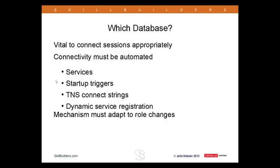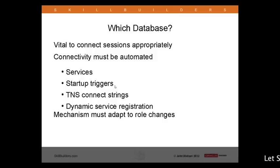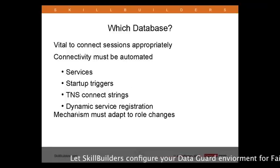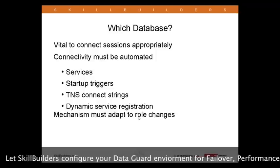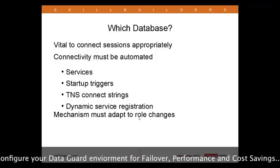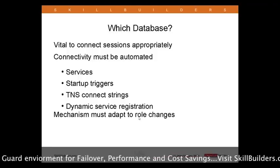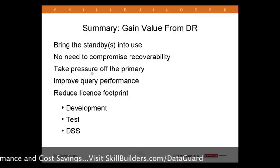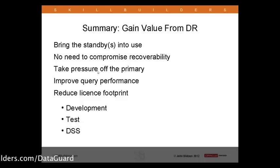Which brings us to the very last point, which I won't have time to talk about in great detail — my apologies. In this environment, we need to be absolutely clear that you connect to the correct database. We can control and automate connectivity by use of services, startup triggers, TNS connect strings, and a mechanism that dynamically adapts to role changes. Because remember fault tolerance — at any stage my primary might fail, and I need to automatically activate the standby; at that point the roles change and we redirect sessions appropriately. We can automate that as well. That concludes what I wanted to talk about — techniques for gaining more value from your disaster recovery system, and perhaps helping motivate moving towards a more advanced Data Guard configuration.